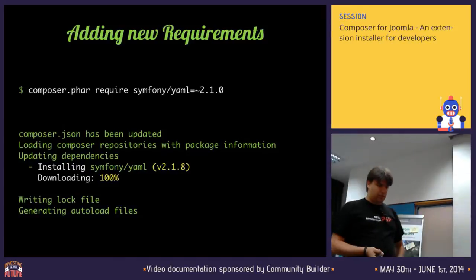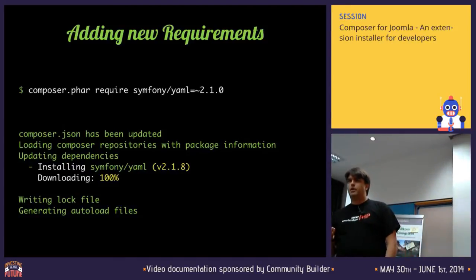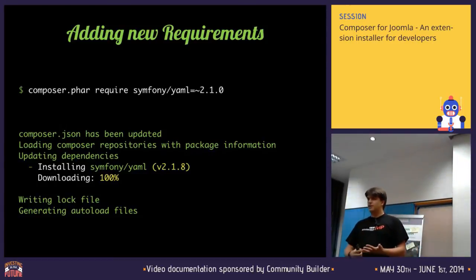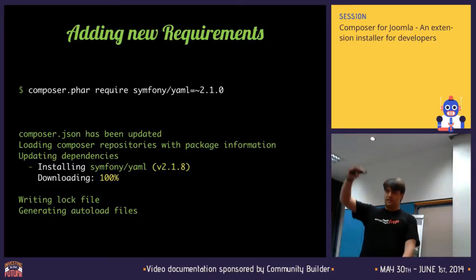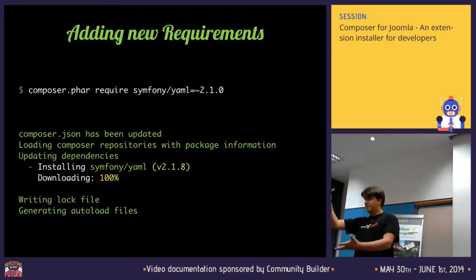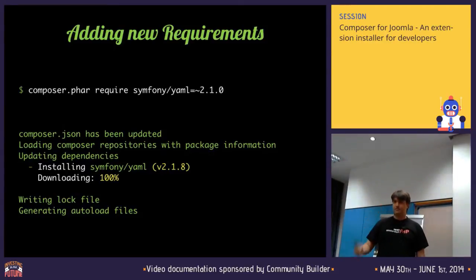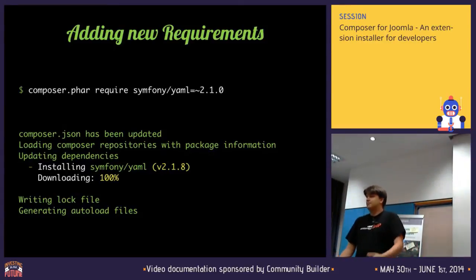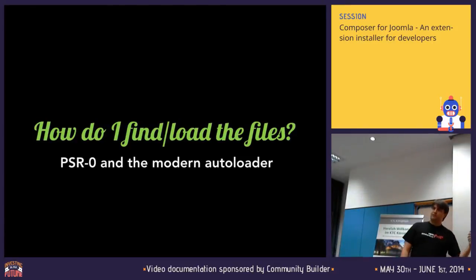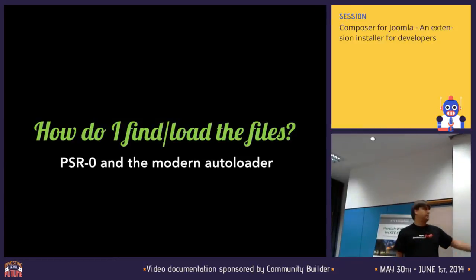The main issue we had with PHP before — whenever we used third-party code — we had to figure out how to load that code, how to find the classes. We used to have hundreds of require statements. That's what we had back then, but it wasn't ideal. What Composer does is make use of what fixes that, which is PSR-0. With PHP 5.0 the whole autoloader came in — basically the autoloader was something that said, 'if you want this class, I can give you a function that finds it and loads it for you,' so you no longer have to do requires.